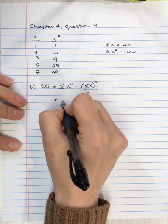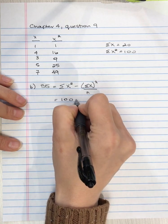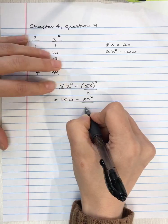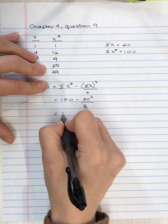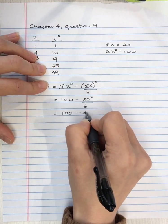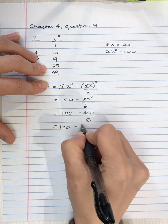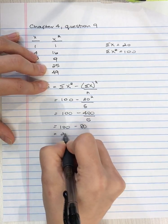We take 100, subtract 20 squared, divided by 5. So that's 100 minus 400 divided by 5, which is 100 minus 80, equals 20.